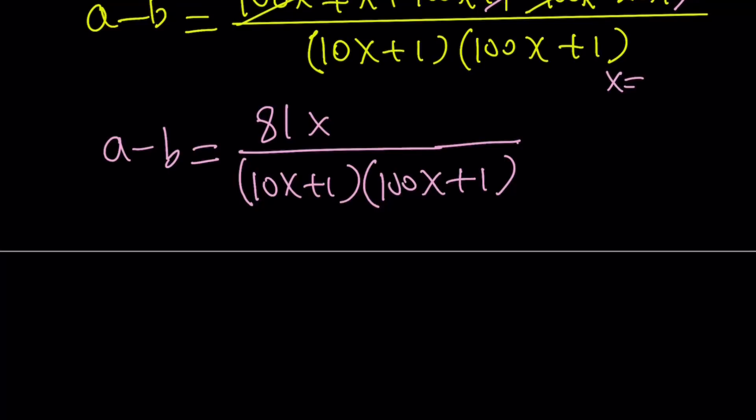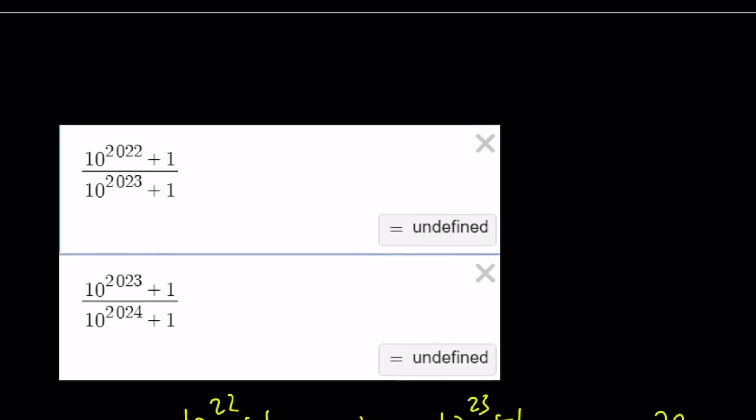Well, here's the thing. 81x, so x is 10^22, so it's definitely a positive quantity. x is positive. 81x is positive. 10x + 1 is positive. 100x + 1 is also positive. Everything is positive. So it's all good. We're all in a positive mood. So this means that a minus b is greater than zero. And what is that supposed to mean? If a minus b is greater than zero, that means a is greater than b. Great. So the larger number is the first number, and we were looking for the larger one.